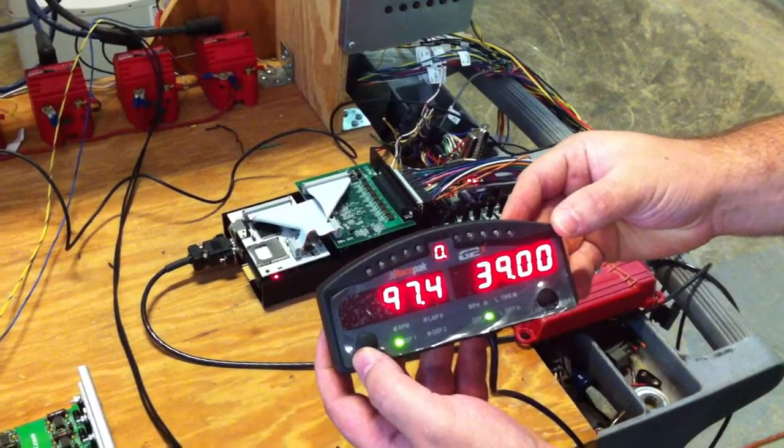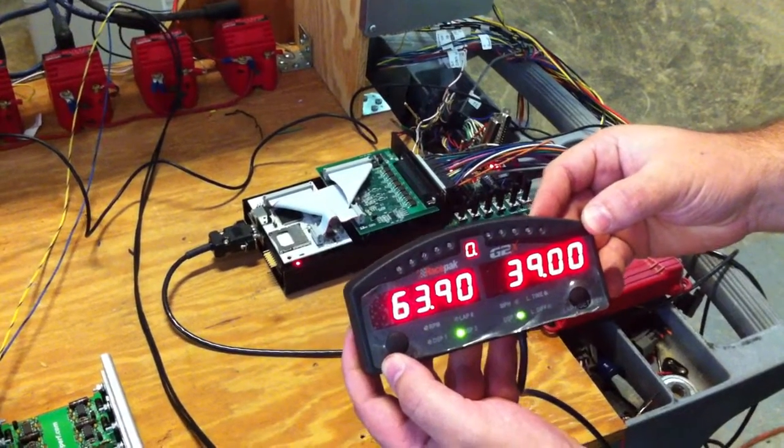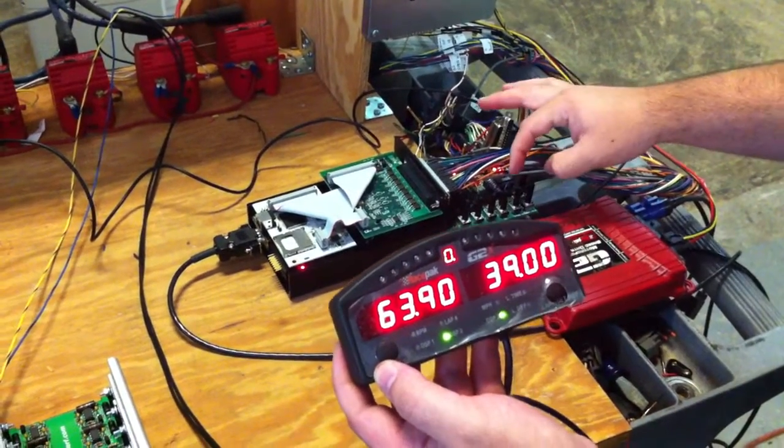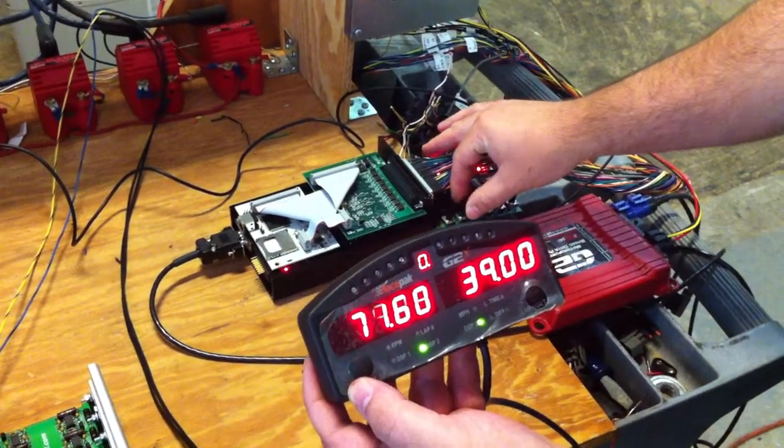That is our map sensor. That one right there is our intake air tank. Pretty neat. Just wanted to show it works.